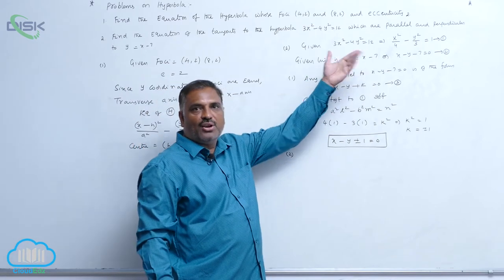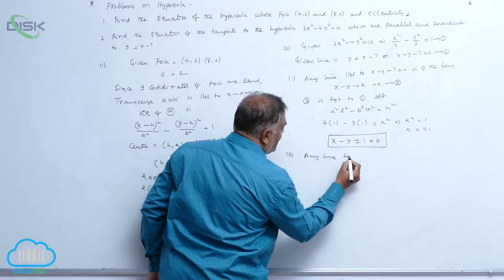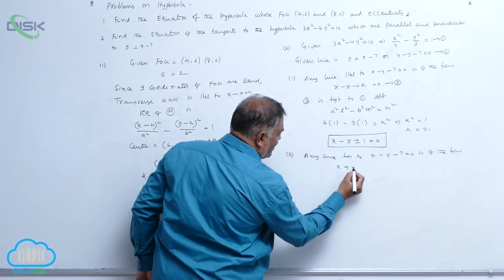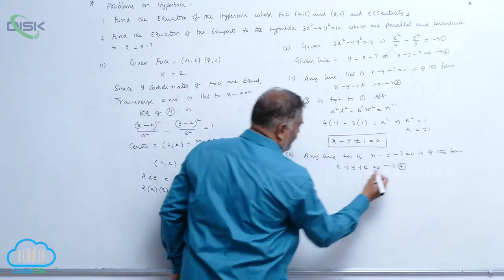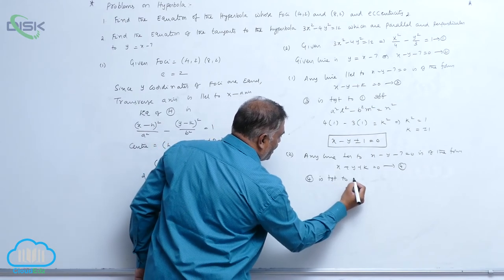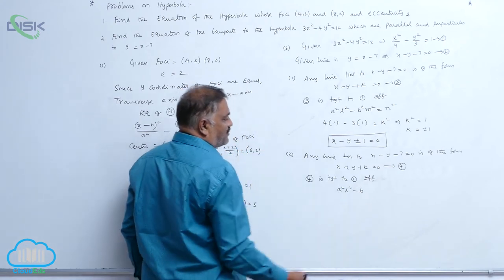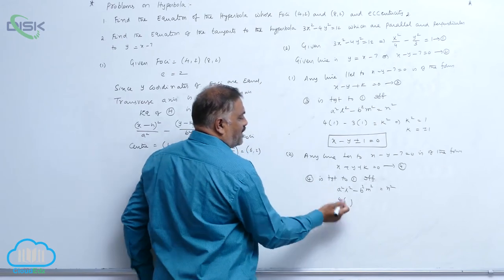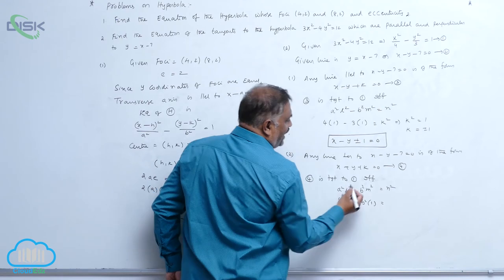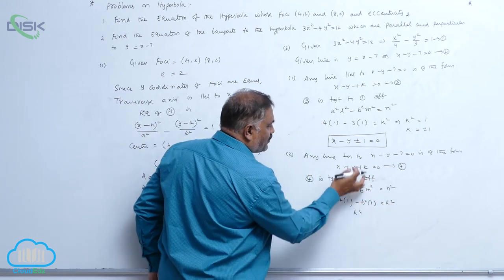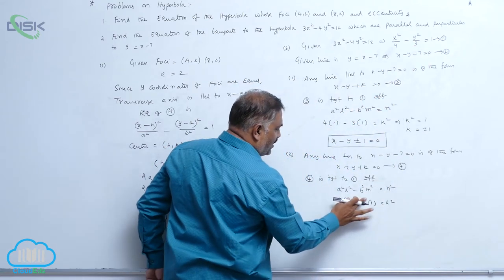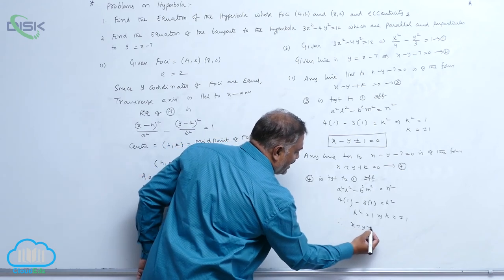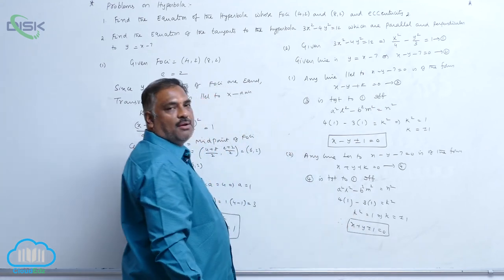Now we need to find the perpendicular tangent also. Any line perpendicular to x − y − 7 = 0 is of the form x + y + k = 0 — call it equation 4. Equation 4 is tangent to equation 1 if and only if a²l² − b²m² = n². Again a² = 4, l² = 1, b² = 3, m² = 1, so 4(1) − 3(1) = k², giving k² = 1, hence k = ±1. Therefore x + y ± 1 = 0 is the equation of the tangent line perpendicular to the given line.